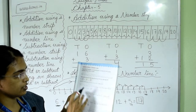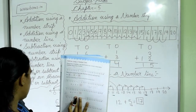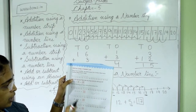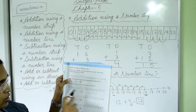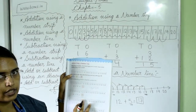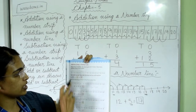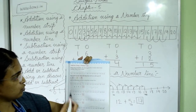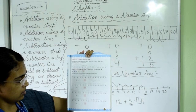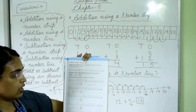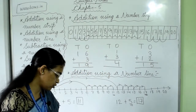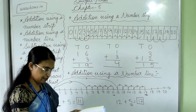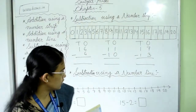I have shown you 6 plus 5 and 12 plus 5. The remaining 2 questions you will do by yourself using this number line — draw the lines. This is your homework. Now turn the page to page number 56.